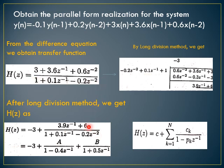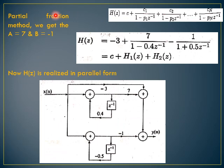We have reduced the power of the numerator to first order. This function can now be partialized using partial fraction expansion. We solve: H(z) = -3 + A/(1 - 0.4z⁻¹) + B/(1 + 0.5z⁻¹). By partial fraction method, we get A = 7 and B = -1. Therefore H(z) = -3 + 7/(1 - 0.4z⁻¹) - 1/(1 + 0.5z⁻¹). This is similar to the general parallel form expression with p1 = 0.4 and p2 = -0.5.